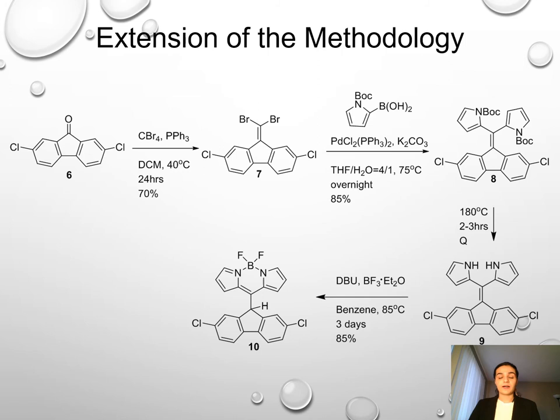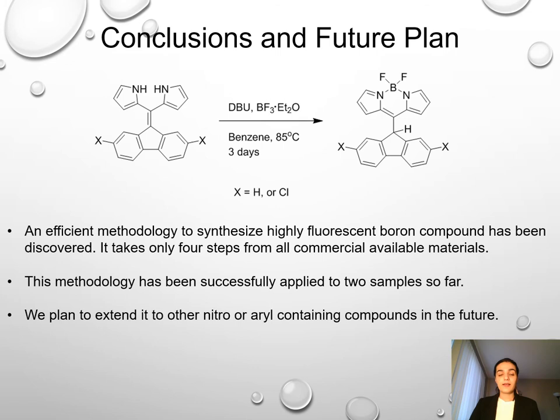We extended our synthesis to compound 6. We applied our method using similar steps to also get compound 10, and compound 10 is highly fluorescent too. In conclusion, an efficient methodology to synthesize highly fluorescent boron compounds has been discovered, taking only four steps from commercially available materials. This methodology has been successfully applied to two samples so far, and we plan to extend it to other nitro and aryl-containing compounds in the future.